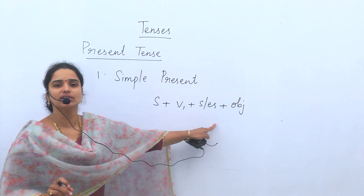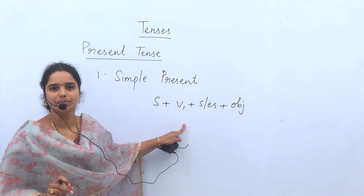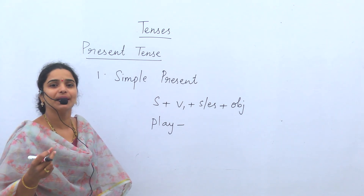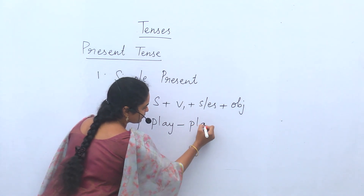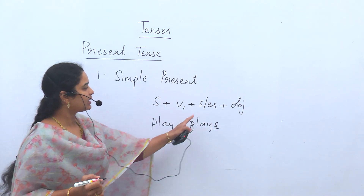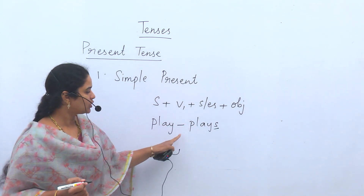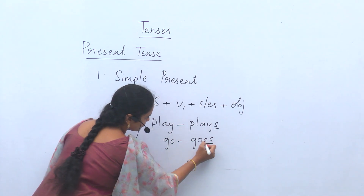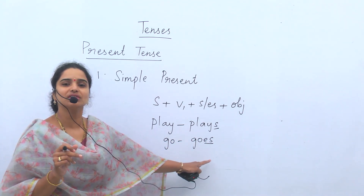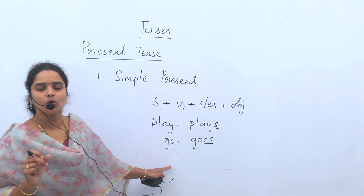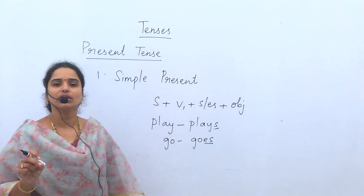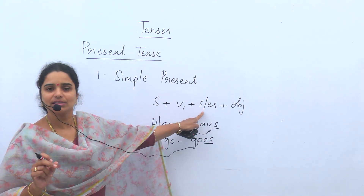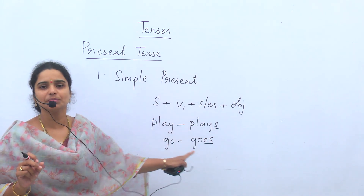After V1, we add S or ES — that is the plural form of the verb. For example, if we use the verb 'play', the plural form of play is 'plays' — P-L-A-Y-S. For the verb 'go', we add ES — 'goes'. Similarly, 'come' becomes 'comes', 'reach' becomes 'reaches' — R-E-A-C-H-E-S. For some verbs we include just S, for some we add ES — it depends on the spelling of the verb.